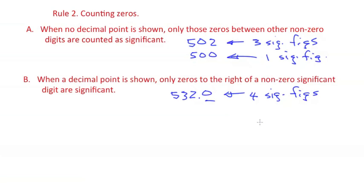Let's take a look at some other examples. In this first case, we see that there is a decimal. So only digits to the right of a non-zero significant figure count. So the zero does count. These do not. I have three significant figures here.